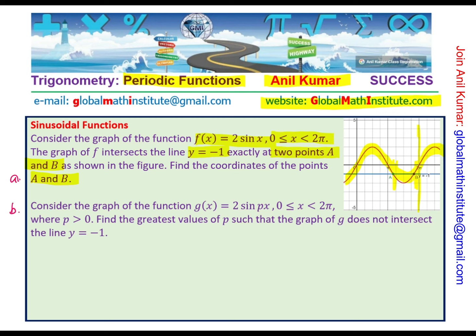Consider the graph of the function g(x) = 2 sin px, x between 0 to 2π, where p > 0. Find the greatest value of p such that the graph of g does not intersect the line y = -1.